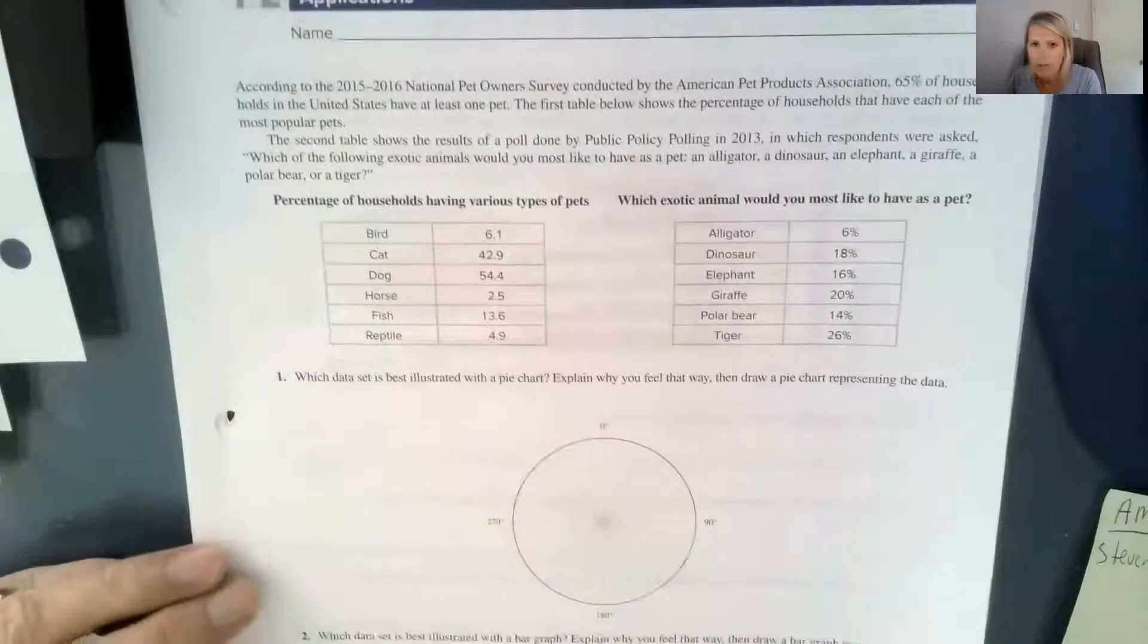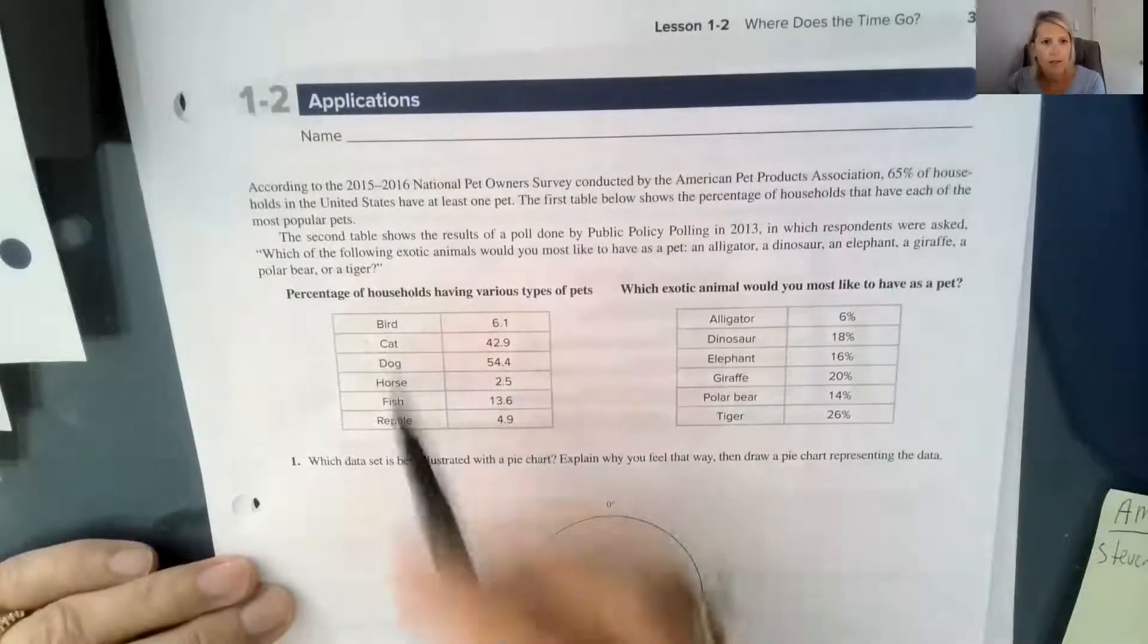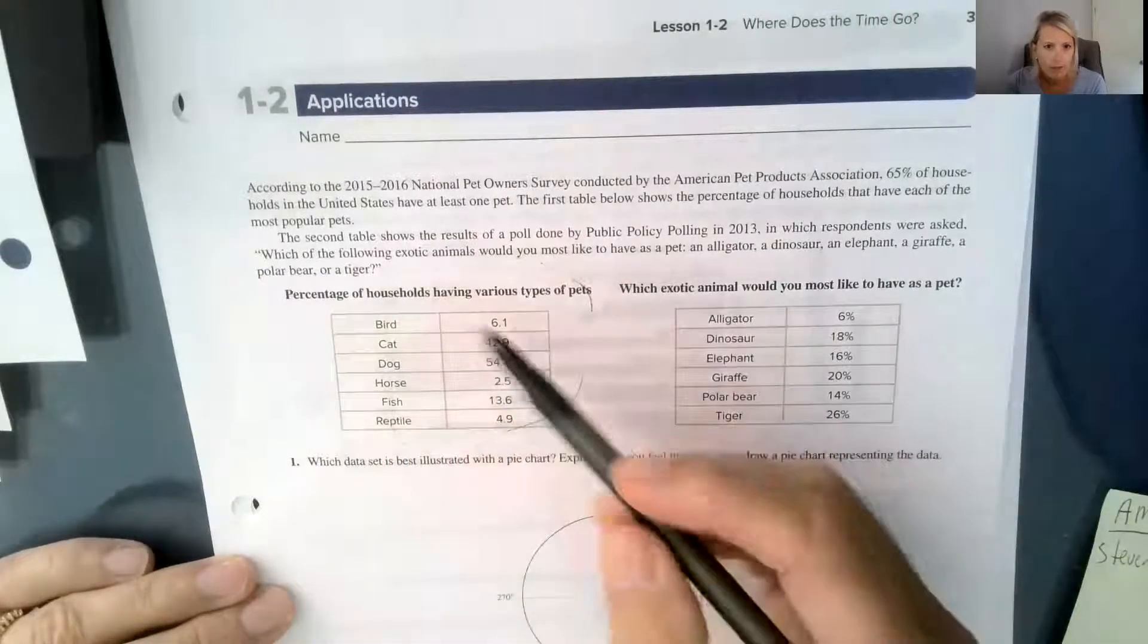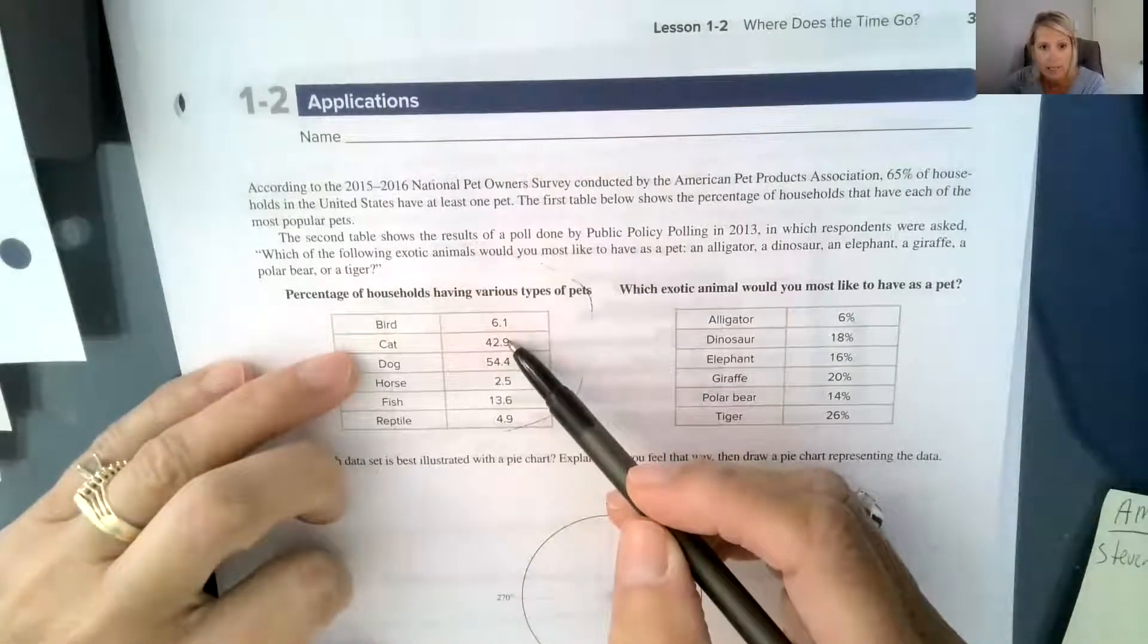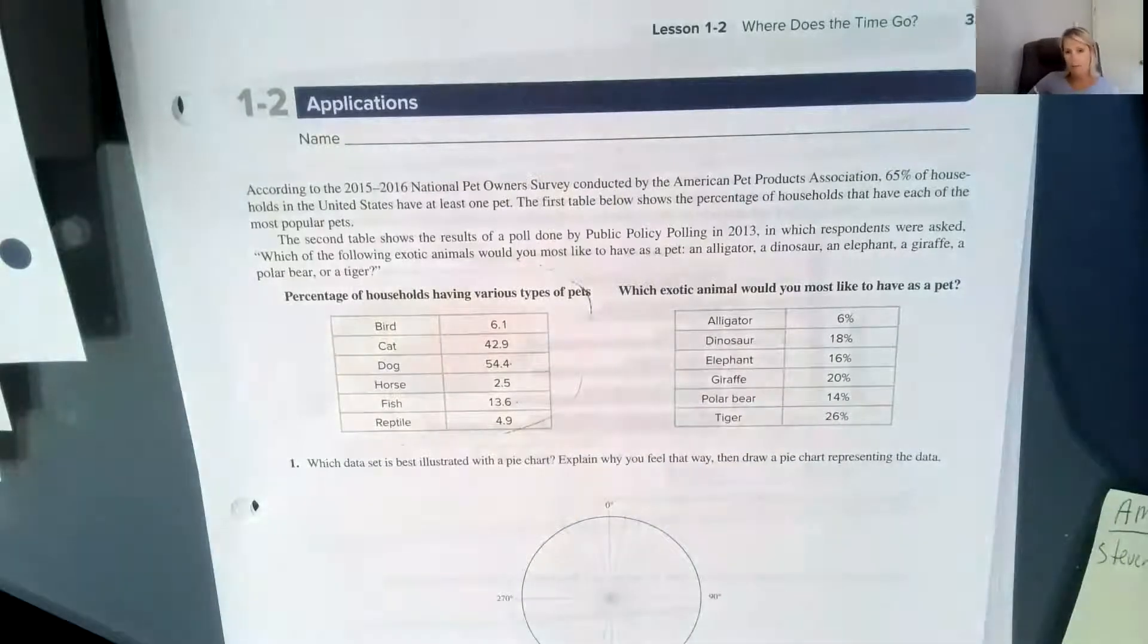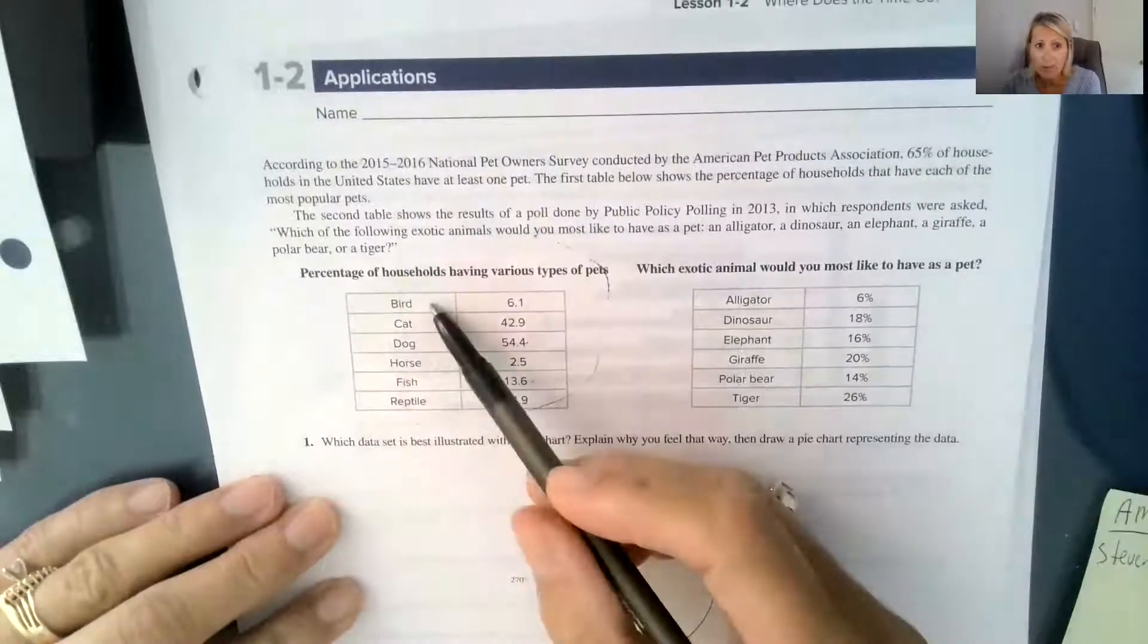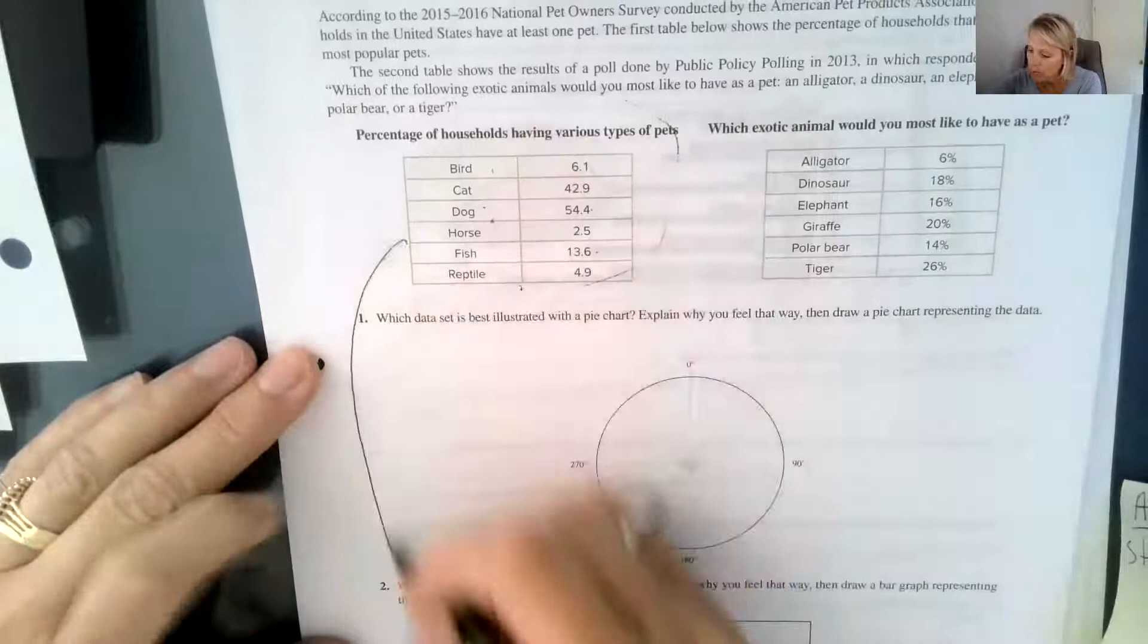And then in class, we also, I also asked you to work on this. It was first we gave you a table here percentage of households having various types of pets. So 6.1% of households, people said that they had a bird. 42.9% said they had a cat. 54.4% said they had a dog. 13.6% said they had a fish. And so here, I could answer, I have a bird, a cat and a dog. And so because I can answer any of these choices, this would not be good for a circle graph. This would be best for the bar graph.